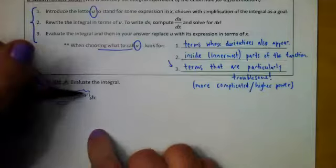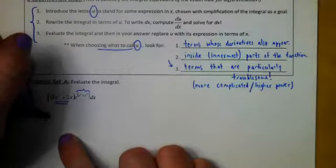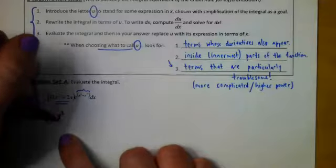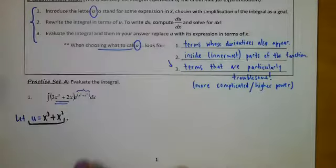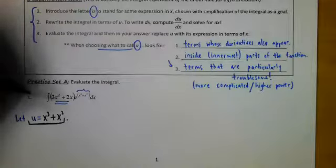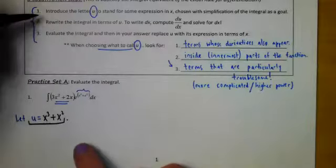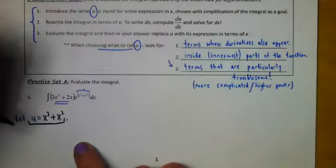The good news is that when you get to this step, if you're ever iffy on which of the two you should pick, and lots of times it's a 50-50 choice like this, you'll know right away if we didn't make the right choice, and then we go back and choose the other part. So this handles step one. It says introduce u to stand for some expression in terms of x chosen to try to simplify the integral.